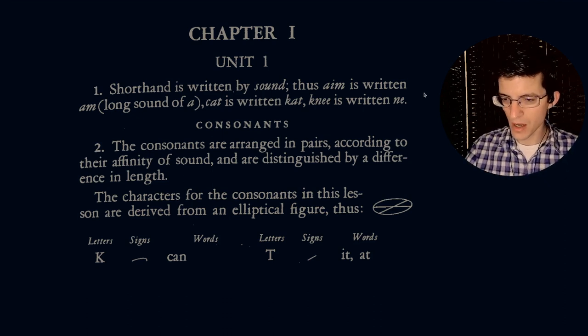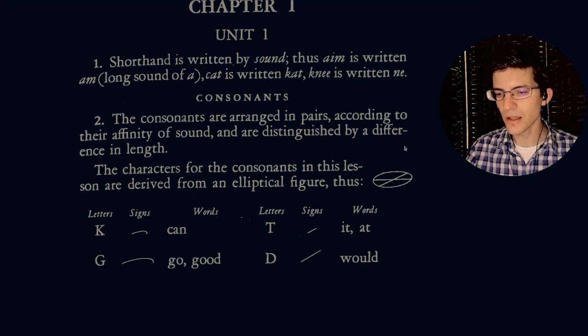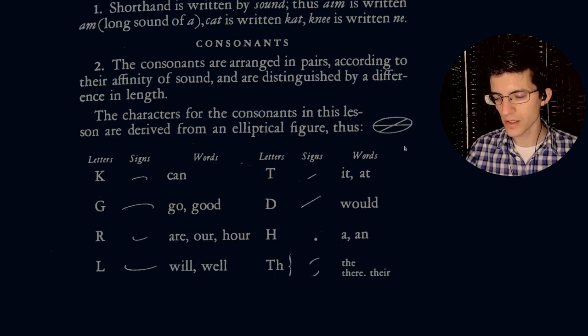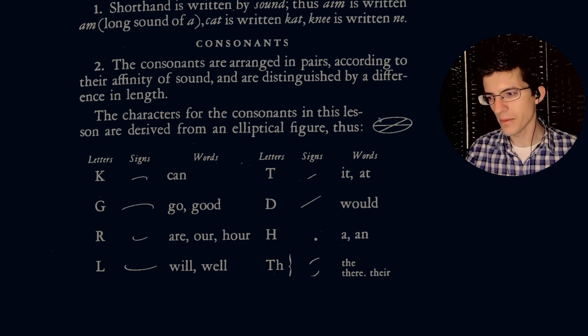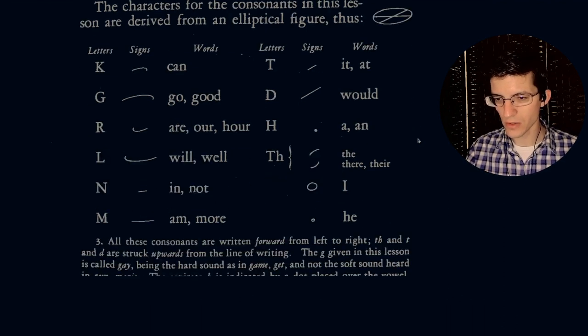Consonants. The consonants are arranged in pairs according to their affinity of sound and are distinguished by a difference in length. The characters for the consonants in this lesson are derived from an elliptical figure. So this figure here on this ellipse, all of the characters can be derived from either portions of the ellipse, a horizontal line, or this line on the diagonal.